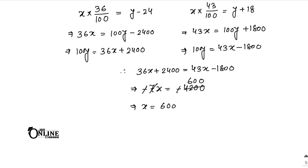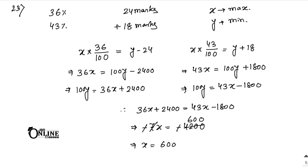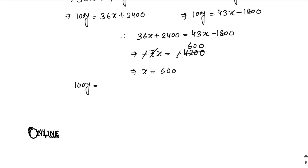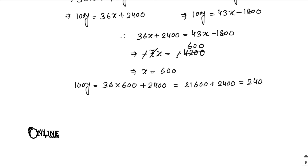So the maximum marks equal 600. Now find the minimum marks: 100y equals 36 into 600 plus 2400, which is 21600 plus 2400 equals 24000. Therefore y equals 240. So the maximum marks are 600 and the minimum marks are 240.